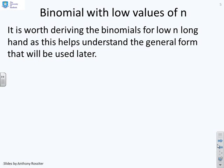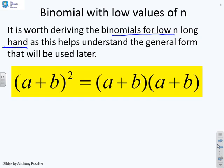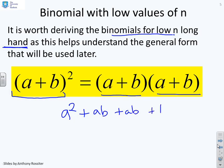Binomials with low values of N then. It's worth deriving the binomials for low N longhand as this helps understand the sort of forms that you get later. So for example, if I've got A plus B squared, now squared is the simplest you can get. Clearly that's A plus B times A plus B. Now you could do this yourself. You could very quickly demonstrate this gives you A squared plus AB plus AB plus B squared, or if I combine common terms, A squared plus 2AB plus B squared. So there's the binomial expansion where you've got a power of 2.